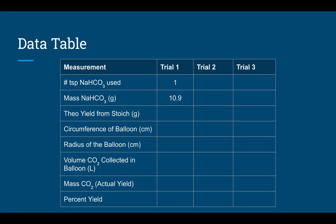Now that we've collected some data, it's important to record it in a data table. My table has space for three separate trials — one per group member. In trial one, I've used one teaspoon of sodium bicarbonate, which we calculated corresponds to 10.9 grams. This is one of the most significant measurements we've made and will be used throughout the rest of the experiment.